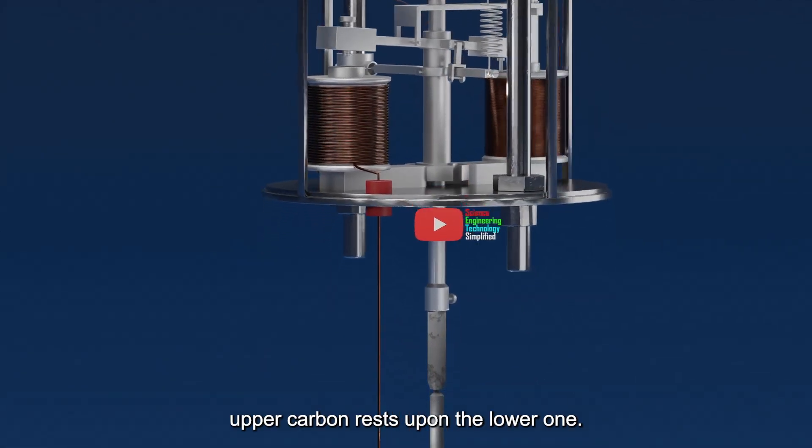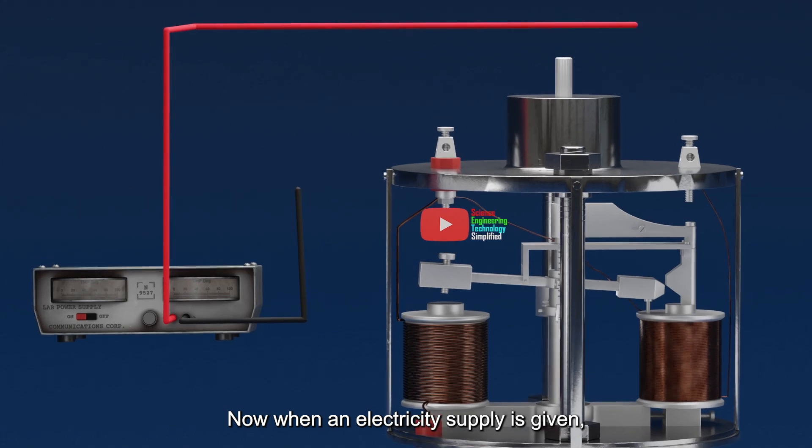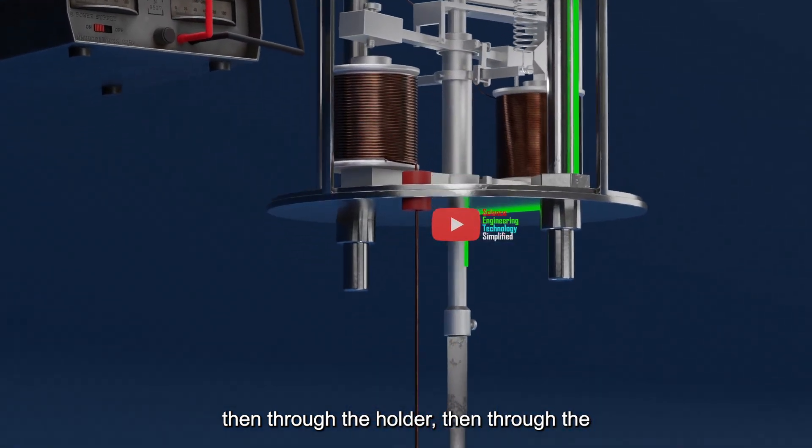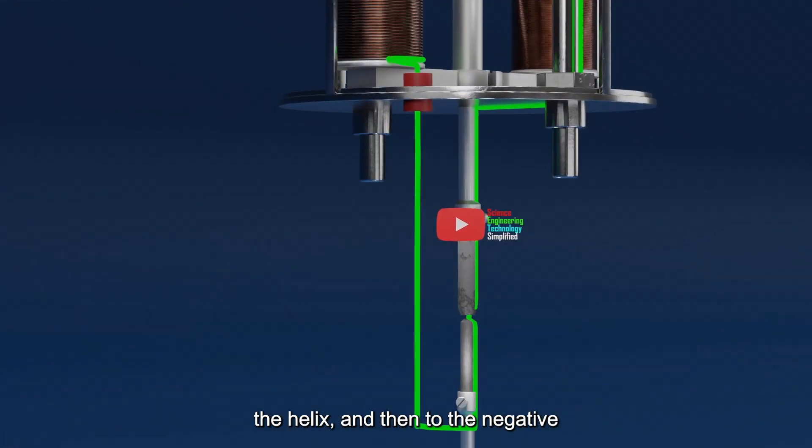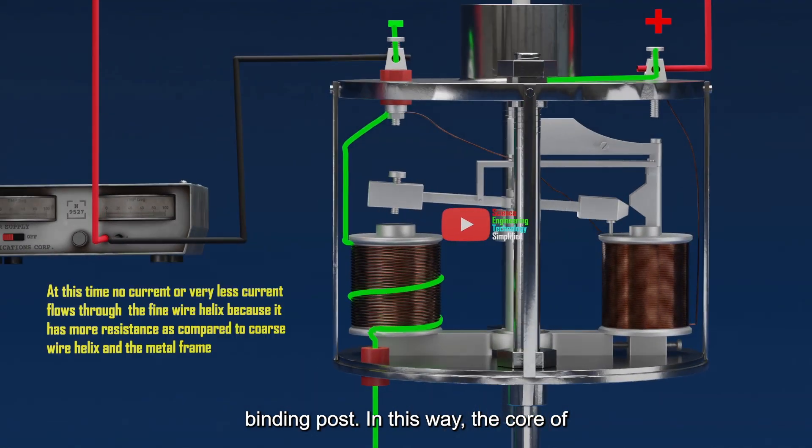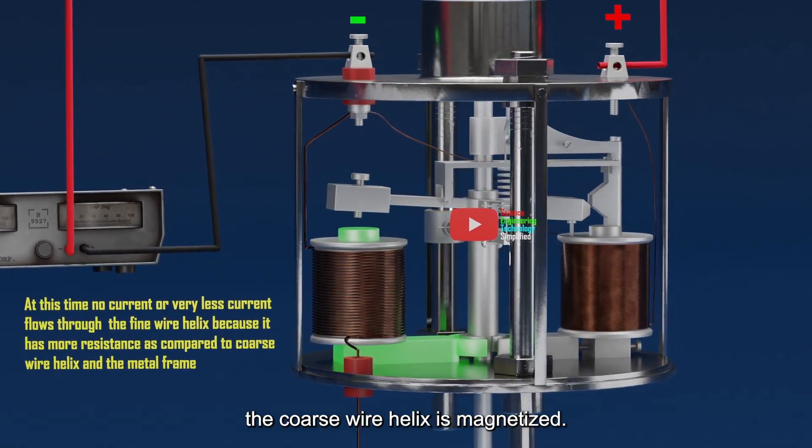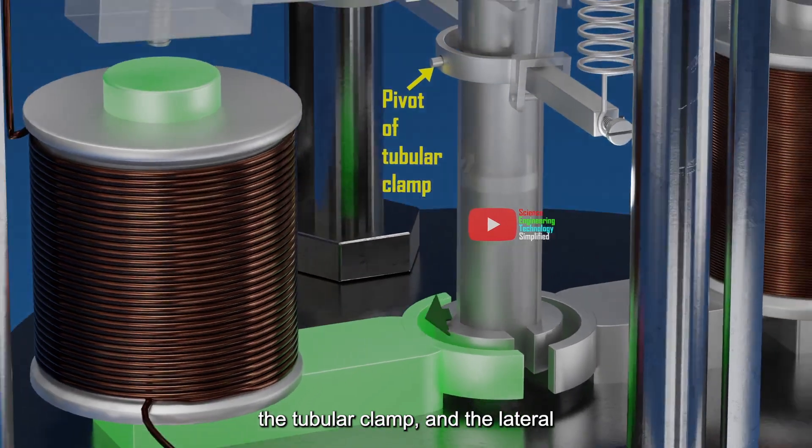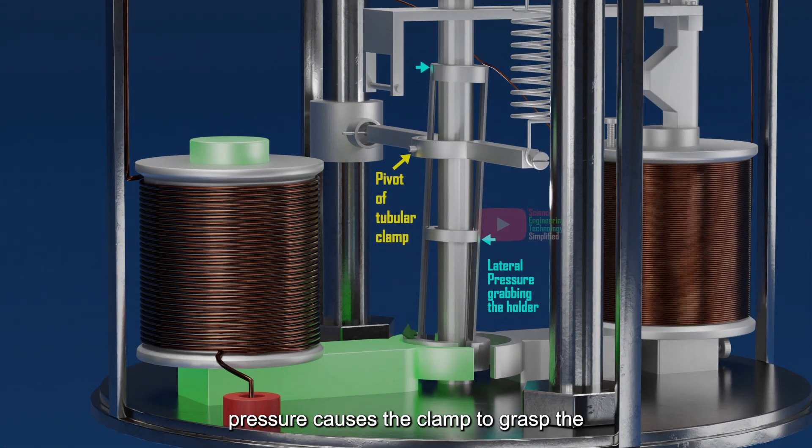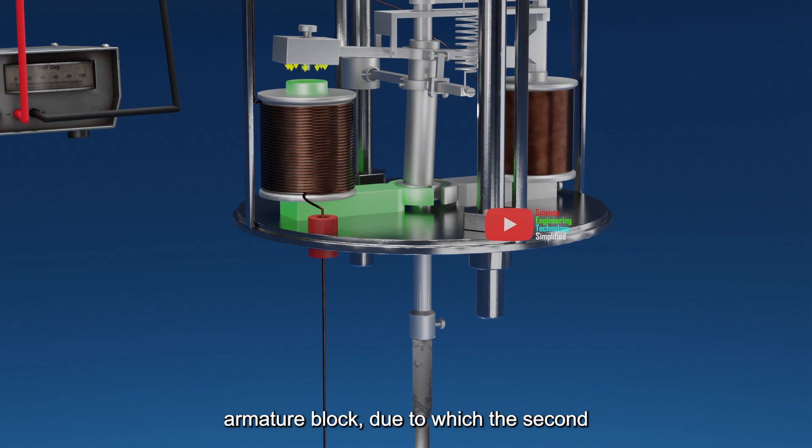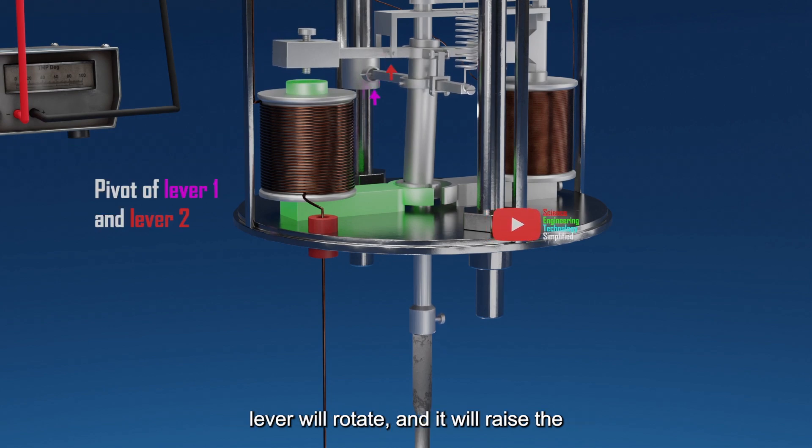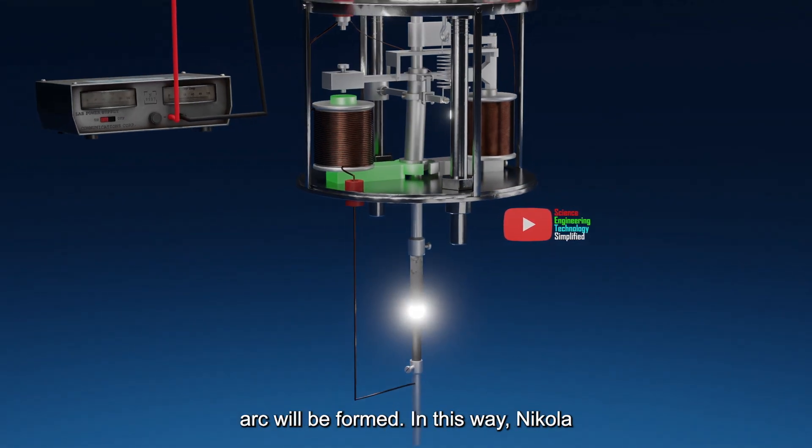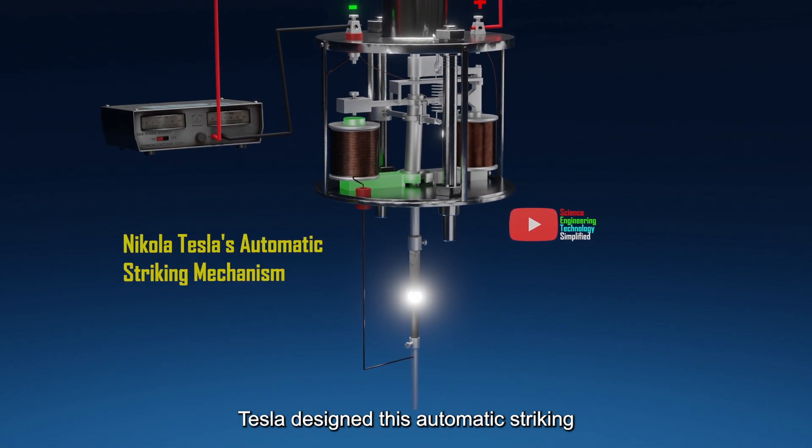Initially, the upper carbon rests upon the lower one. Now when an electricity supply is given, current flows through the positive binding post and then through the frame, then through the holder, then through the carbons, then through the coarse wire of the helix, and then to the negative binding post. In this way, the core of the coarse wire helix is magnetized. Now, this magnetized core will do two things. It will attract the armature of the tubular clamp and the lateral pressure causes the clamp to grasp the holder. It will attract the soft iron armature block, due to which the second lever will rotate, and it will raise the first lever which is connected to it. Thus, carbons will be separated and an arc will be formed. In this way, Nikola Tesla designed this automatic striking mechanism.